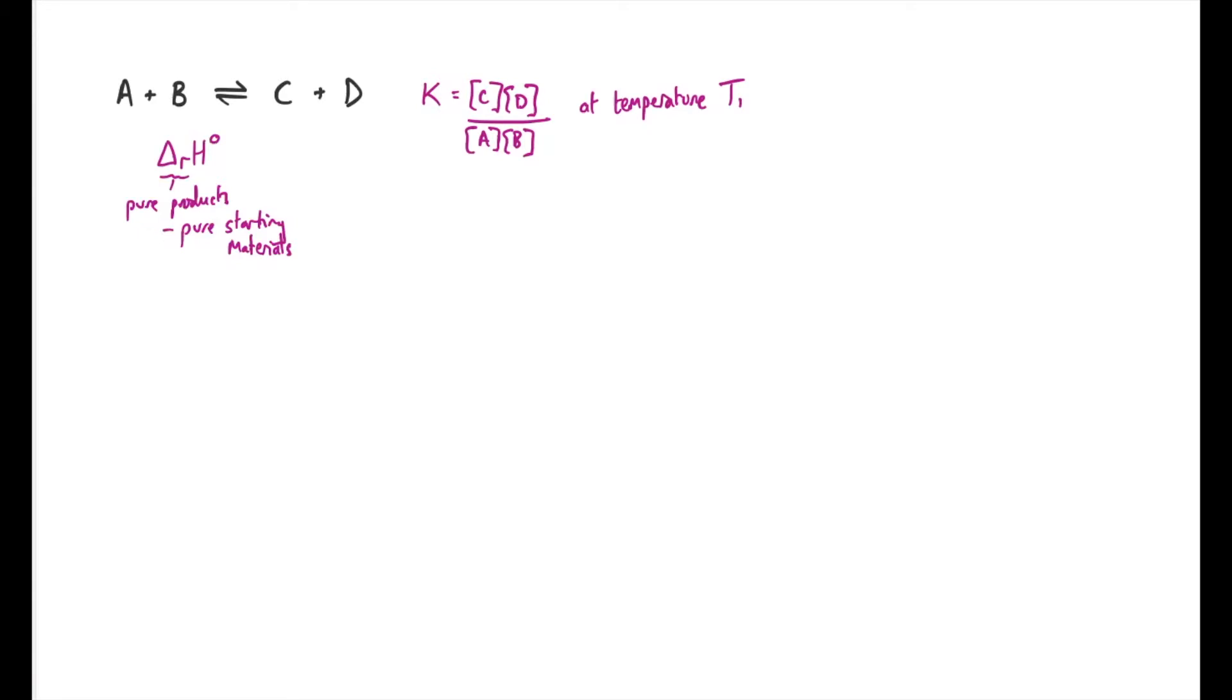How do I know that the equilibrium constant is dependent on temperature? Well we can look at one of the very key equations in thermodynamics. The delta RG for the reaction at standard conditions can be shown to be equal to minus RT log K. I can rearrange this equation to give me log K equals minus delta RG naught divided by RT. There is a strong temperature dependence here. Not only is there a T down here, but also the Gibbs free energy change for the reaction is also a function of T.